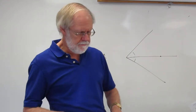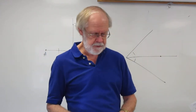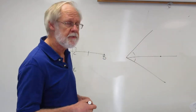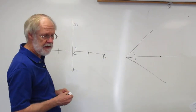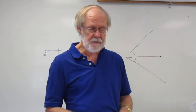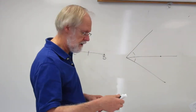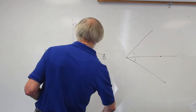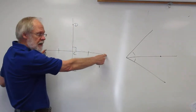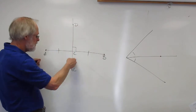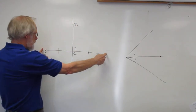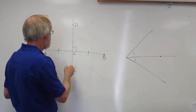Theorem 5.1 in your books, the Perpendicular Bisector Theorem, says if a point is on the perpendicular bisector of a line segment, then it is equidistant from the endpoints of the segment. I drew segment AB and then I drew its perpendicular bisector — perpendicular to it, and bisector because each side here is equal.